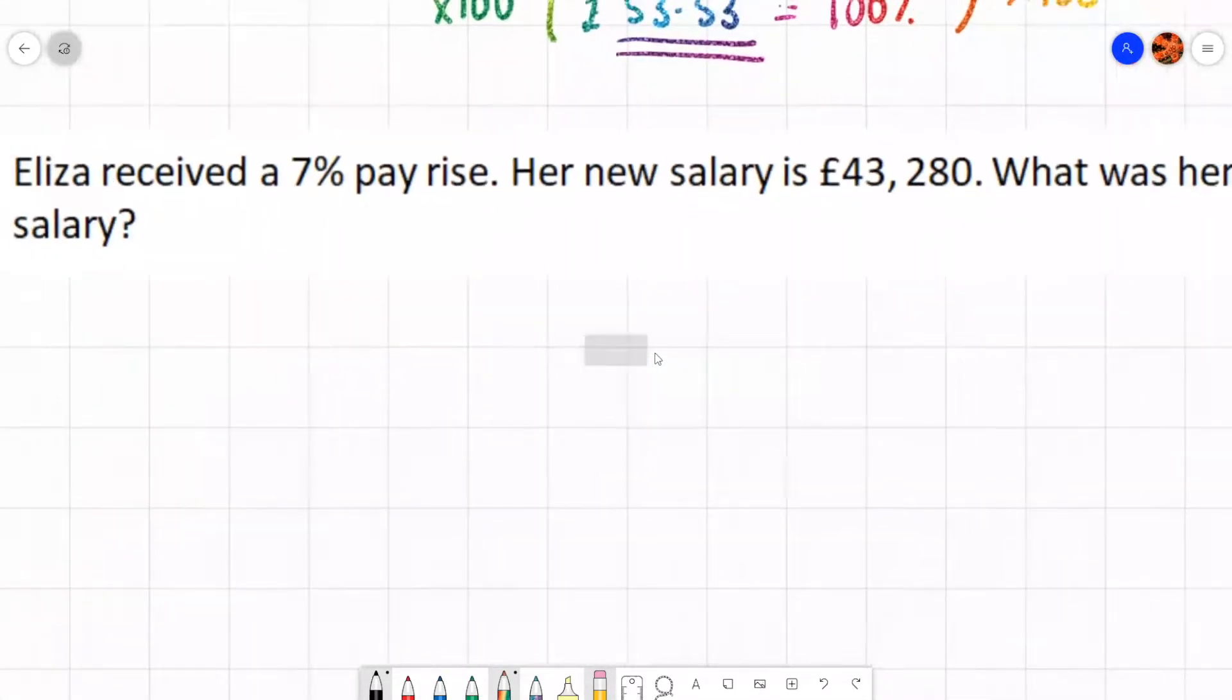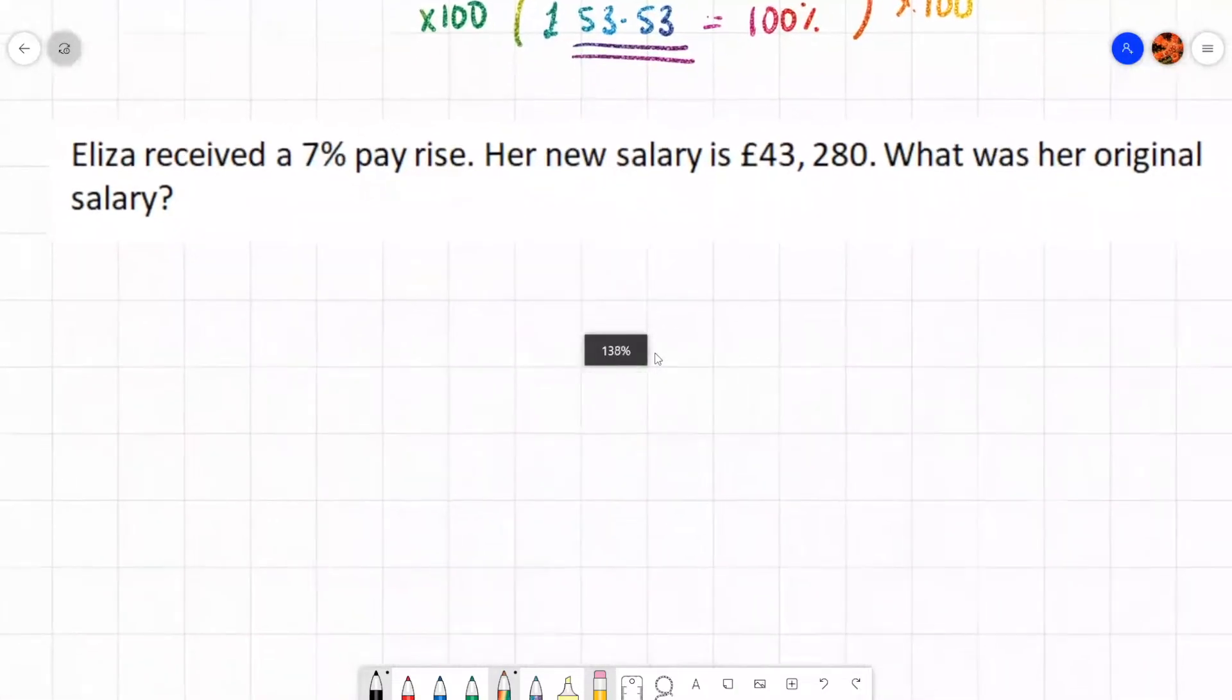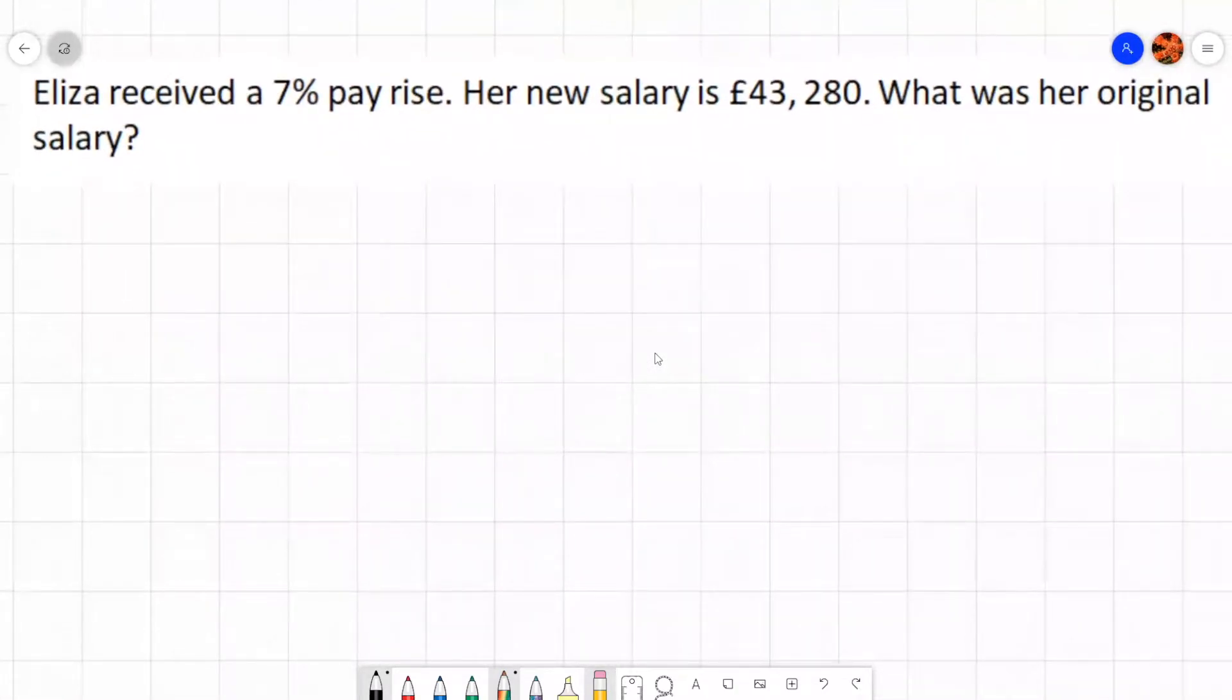So this time Eliza received a 7% pay rise. Her new salary is £43,280. What was her original salary? Okay. So again,